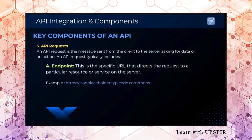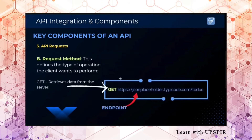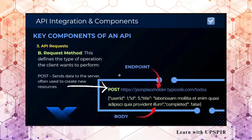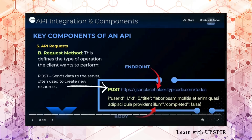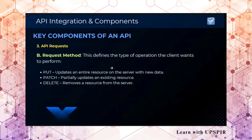Then there is the request. One part is the endpoint — a specific URL that directs the request to a particular resource. Then we have the request method — GET, PUT, etc. — which retrieves data or sends data to the server. There is also the request body, which contains the information we are sending to the URL. The request method defines the type of operation the client wants to perform: PUT, PATCH, DELETE — different CRUD operations each have a different method.